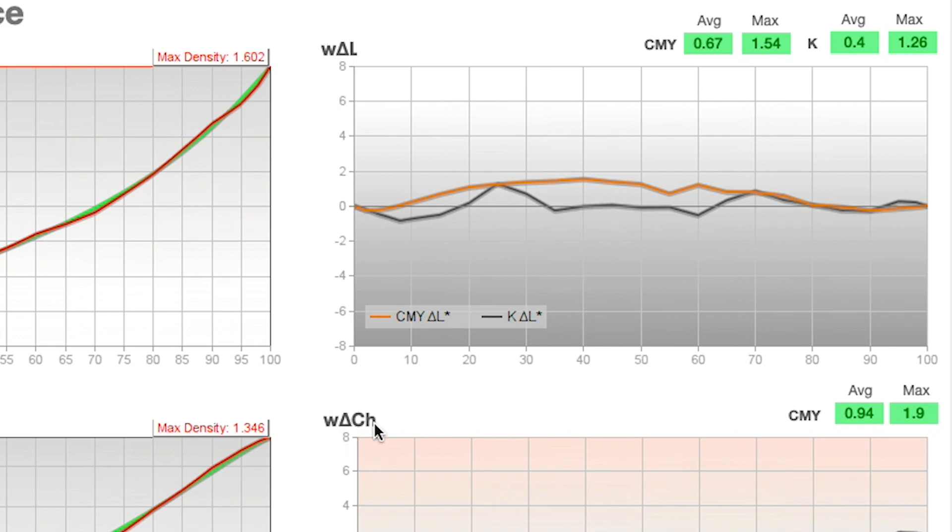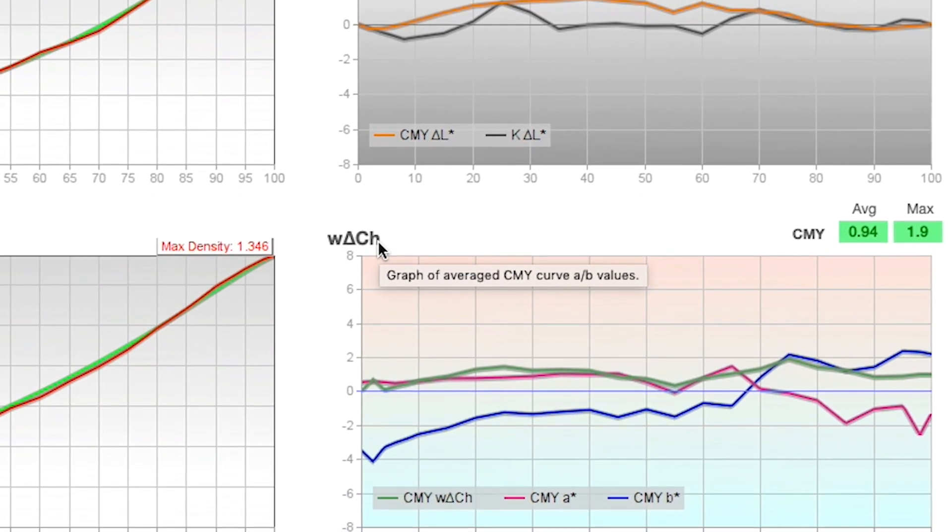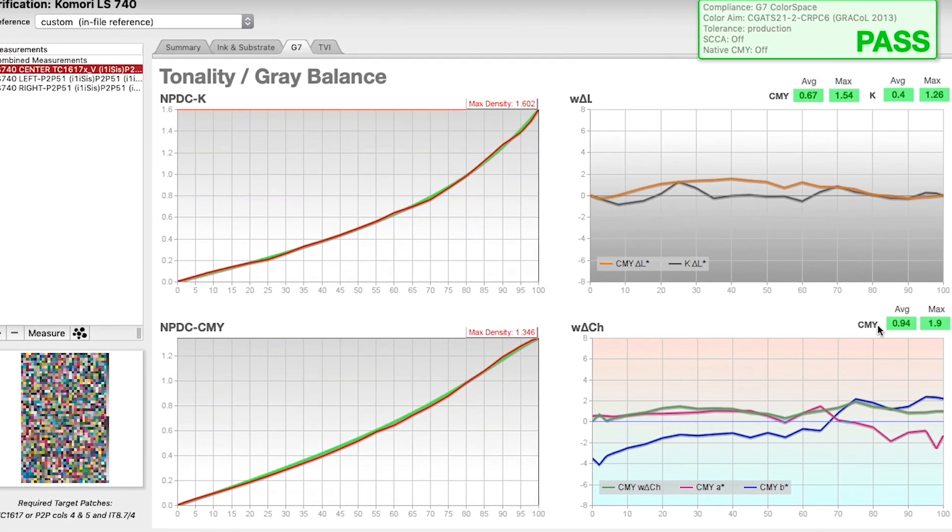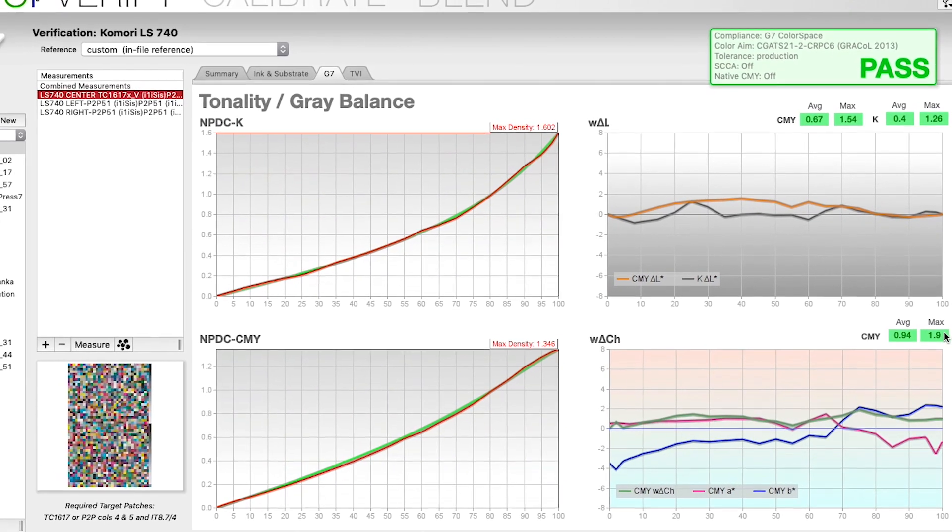Weighted delta CH is looking at the color of those scales, the color of the gray balance. Good gray balance is near neutral. If it's not neutral, meaning that it's casting red or if it's casting blue or if it's casting green, it's no longer neutral. Weighted delta CH is able to determine whether or not that is either out or in within tolerance for neutrality. So it's just looking at the CMY ramp, not the black ramp when we're looking at weighted delta CH.